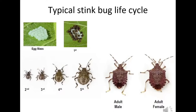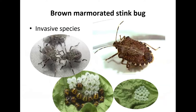The stink bugs then progress through various nymph stages — anywhere along that line they can cause damage to crops. The bigger they get, the more damage they can cause. The adults continue to feed as well. This describes the brown marmorated stink bug life cycle, but all other stink bug life cycles are very similar.